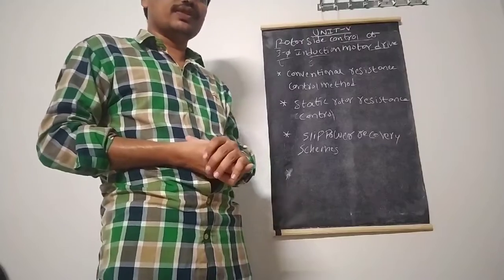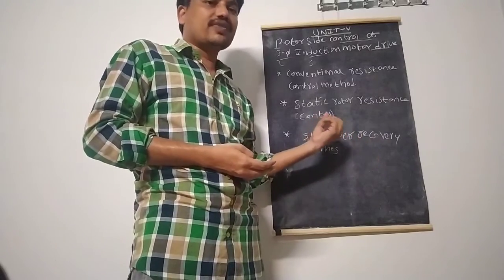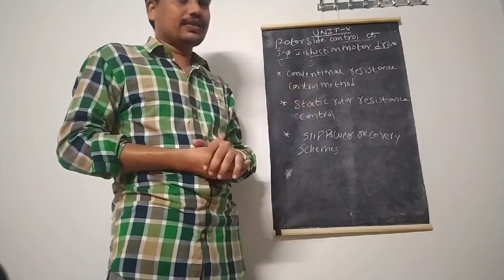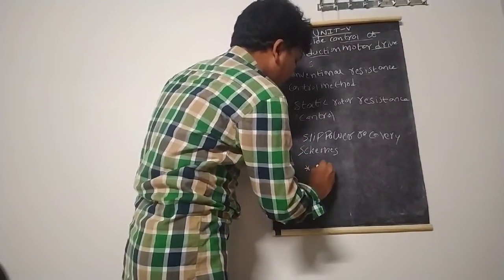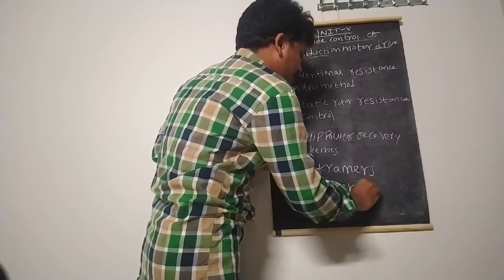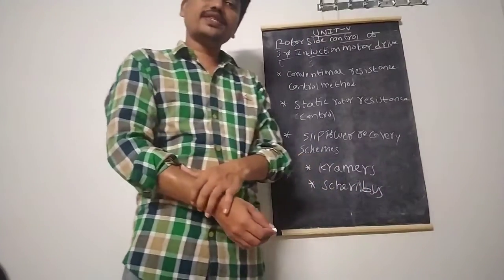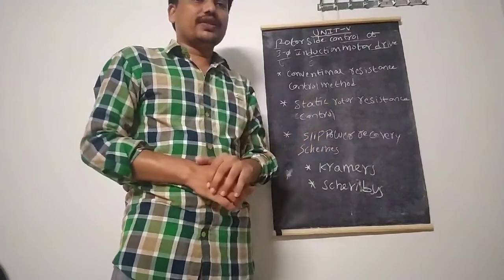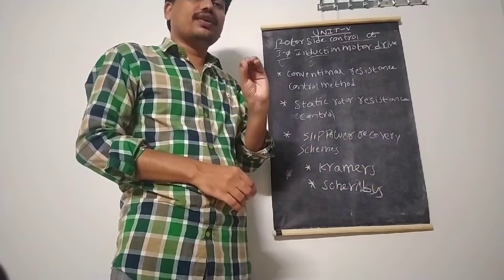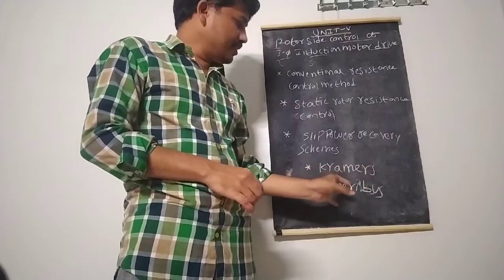The third method is the slip power recovery scheme, which controls the speed of the motor and recovers the slip energy. There are two kinds of methods: the first is the Kramer drive system, and the second is the Scherbius drive. The Kramer drive is further subdivided into conventional and static types, and similarly the Scherbius drive has conventional and static types. However, since the conventional types are not in our syllabus, we directly go through the static methods — the static Kramer drive and the static Scherbius drive.